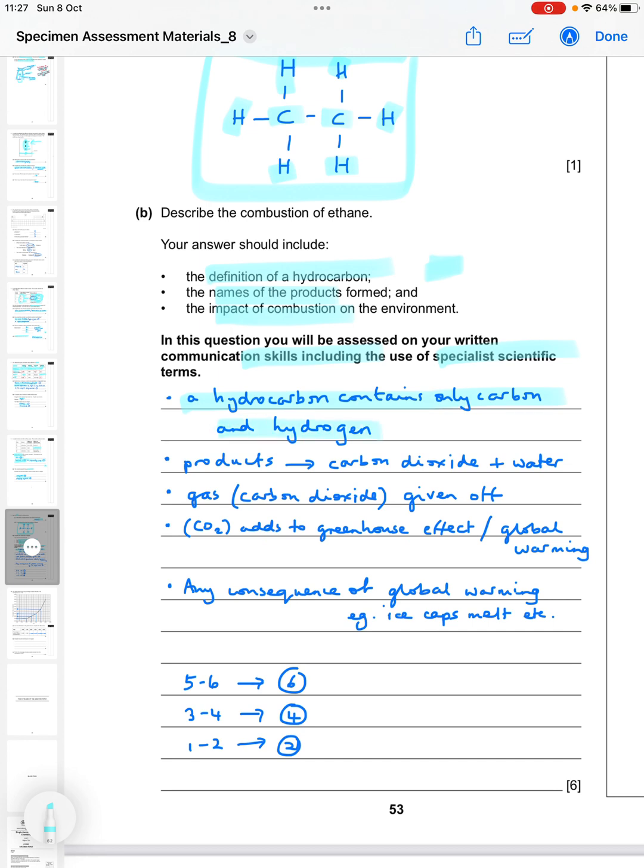Second part: names of the products formed. The products formed are carbon dioxide and water. The impact of the combustion on the environment is that carbon dioxide is given off and it adds to the greenhouse effect, or you could say to global warming. Then any consequence of global warming like the ice caps melting, more extreme weather events, and sea levels rising, all those sorts of things.